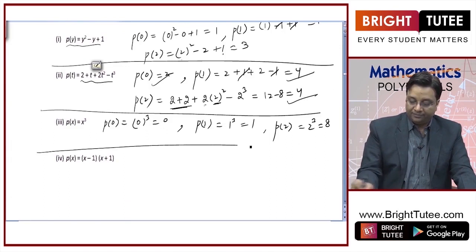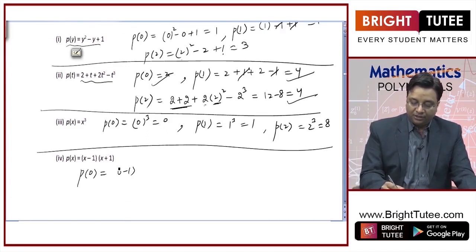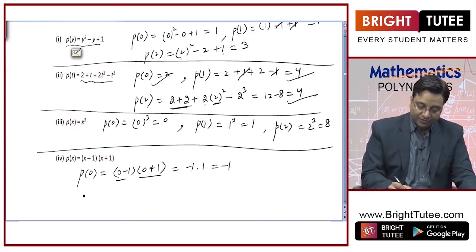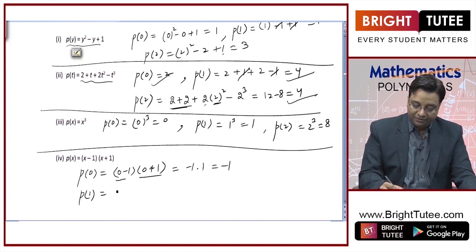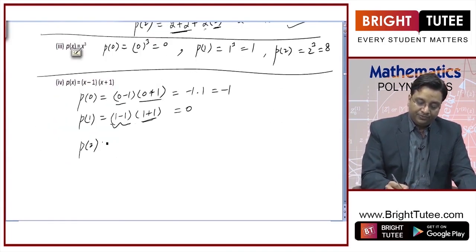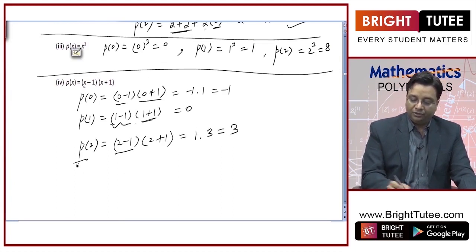Look at this expression. For p of 0, I will replace x by 0: it will become 0 minus 1 and 0 plus 1, which is negative 1 and 1, so the product is minus 1. For p of 1, replace x by 1: 1 minus 1 into 1 plus 1. This is 0 into 2, which is 0. So p of 1 is 0. For p of 2, replace x by 2: 2 minus 1 into 2 plus 1, that is 1 into 3, which is 3. So p of 2 is 3.